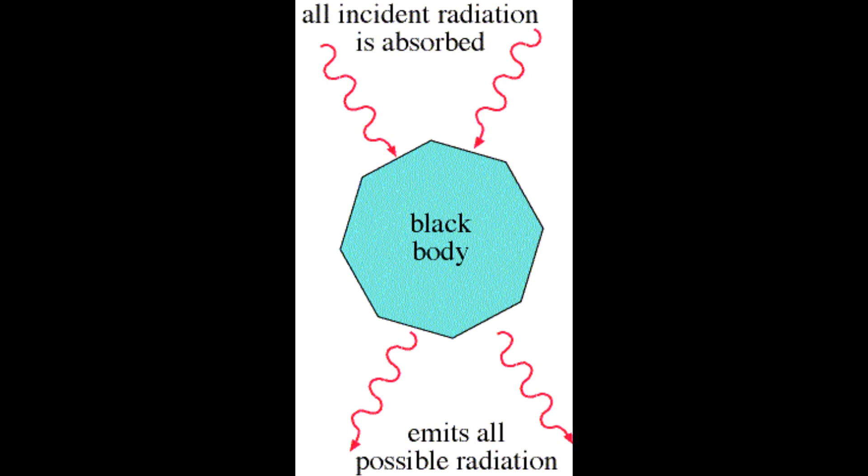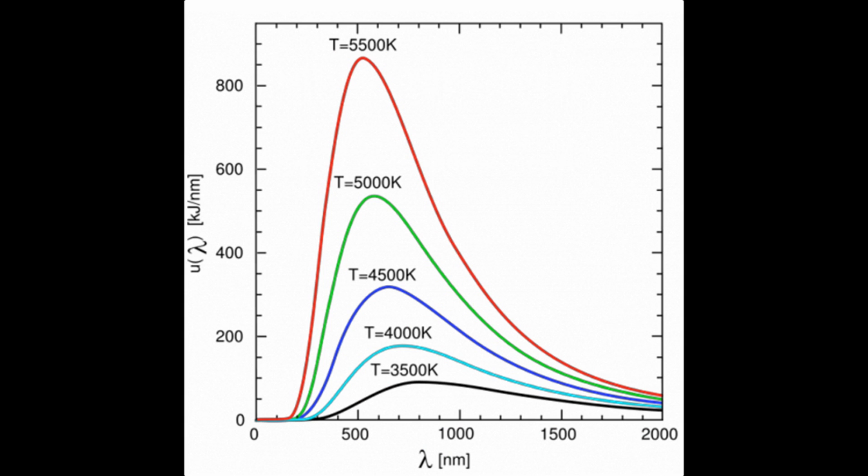An extreme case is that of a blackbody, which is a hypothetical object that absorbs all light that is incident on it. Such an object turns this light into thermal energy, which it then radiates back into its surroundings. The nice thing about a blackbody is that the spectrum of thermal radiation that it emits, called a blackbody spectrum, is entirely determined by the temperature of the object. A blackbody spectrum looks like a hill, and the wavelength at which the spectrum peaks depends entirely on the temperature. In fact, the wavelength at which the blackbody spectrum peaks is lambda sub max equals b over t, where b is Wine's constant, and t is the temperature. Notice that the wavelength at which the blackbody spectrum peaks is shorter for hotter objects.